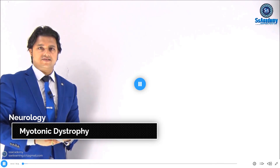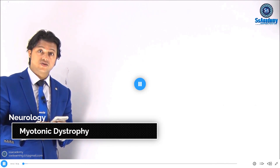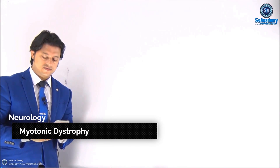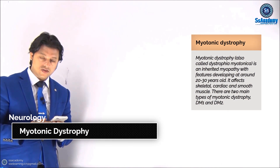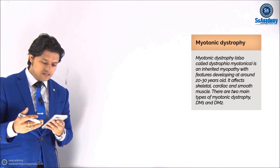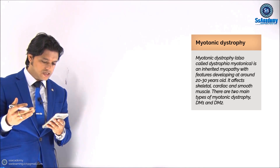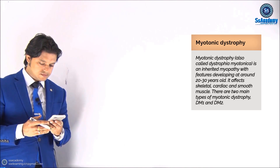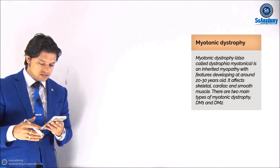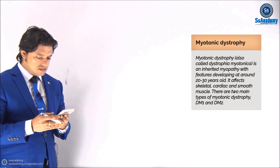Hello, my dear doctor. I'd like to discuss a very important topic: myotonic dystrophy, also called dystrophia myotonica. It is an inherited myopathy with features developing at around 20 to 30 years old. It affects the skeletal, cardiac, and smooth muscles.